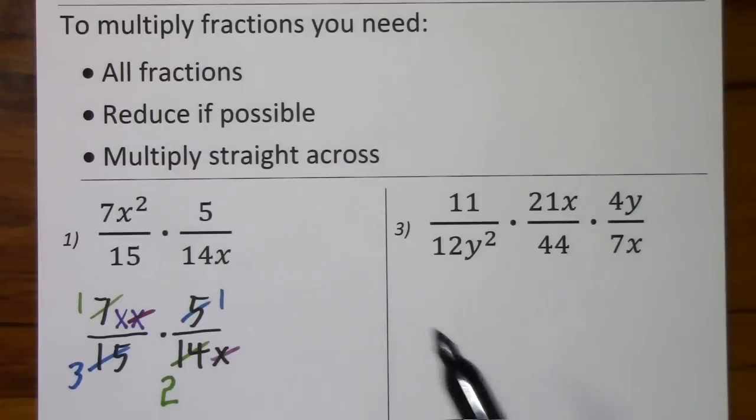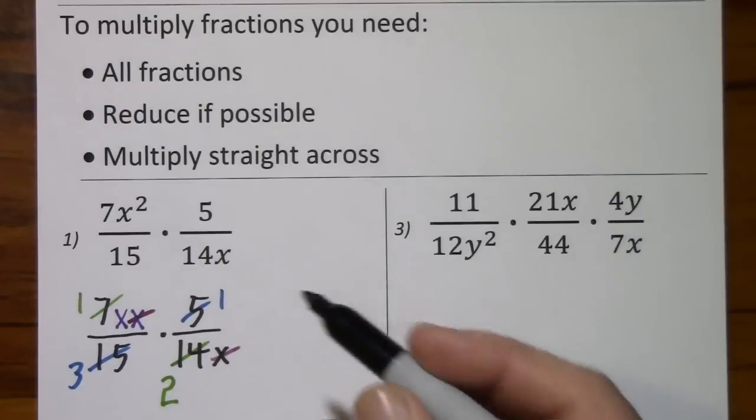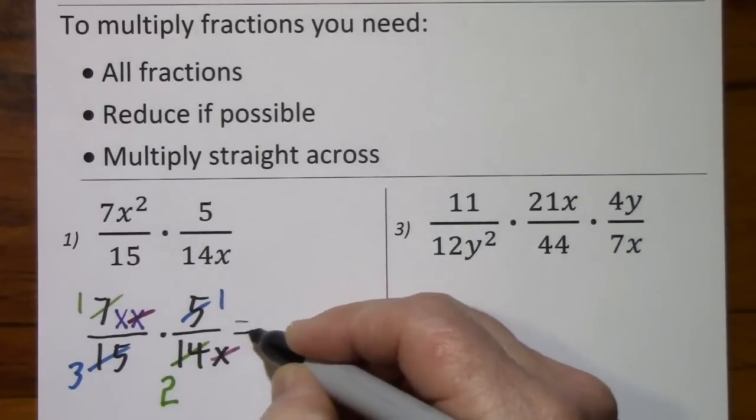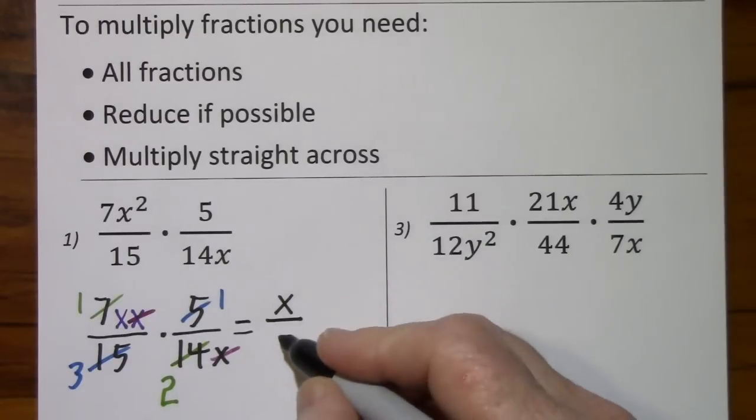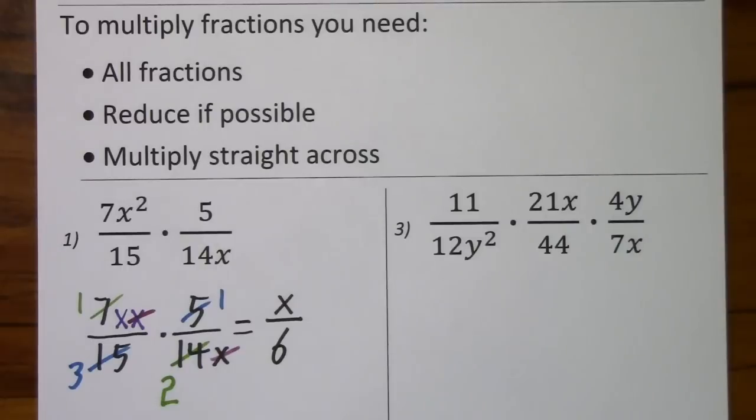And now we simply multiply whatever is left. 1 times x times 1, we'll write that as x. 3 times 2 gives us 6. x over 6.